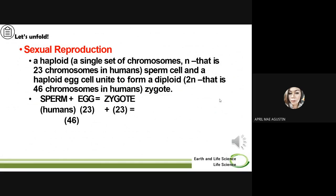So, a haploid sperm cell and a haploid egg cell unite to form a diploid — that is the definition of sexual reproduction. In this case, there are 23 chromosomes from the male and 23 chromosomes from the female, forming a total of 46 chromosomes, or a diploid cell.